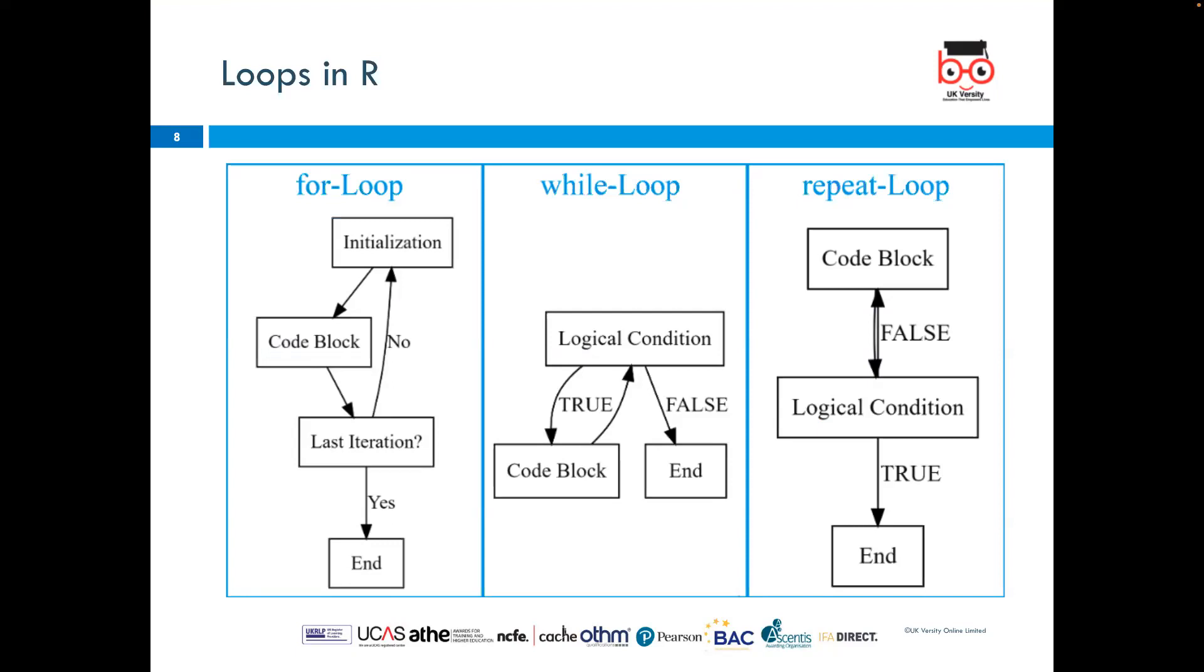If no, it goes from the last iteration to the initialization. That is about for loop. Meanwhile, in while loop, we have the logical condition, the code block, and the end. If true, it goes back to logical condition. If true, it goes to the code block, or if false, it goes to the end.